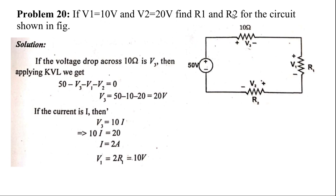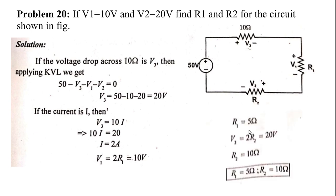With I = 2 amperes known, use Ohm's law to find R1 and R2. For R1: V1 = I × R1 → 10 = 2 × R1 → R1 = 5 ohms. For R2: V2 = I × R2 → 20 = 2 × R2 → R2 = 10 ohms. The next problem will be covered in the next video.